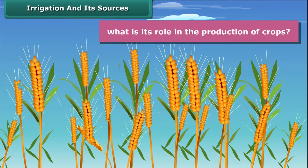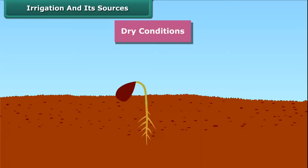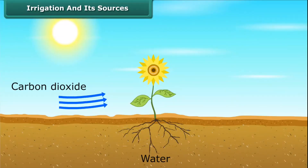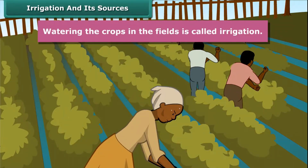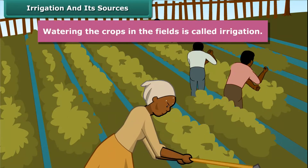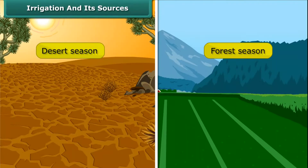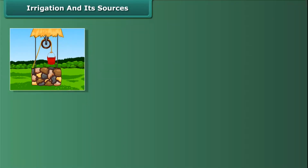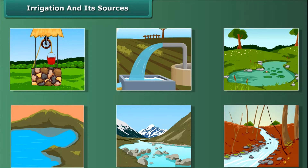Water is essential for crops because germination of seeds cannot take place under dry conditions. Water is absorbed by the plant roots, and along with it, minerals and fertilizers are also absorbed. Hence, watering the crops in the fields is called irrigation. The time and frequency of irrigation varies from soil to soil, crop to crop, and season to season. Sources of irrigation include wells, tube wells, ponds, lakes, rivers, dams, and canals.